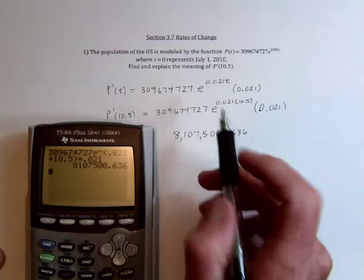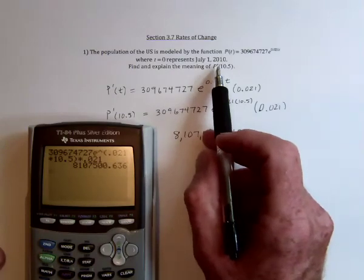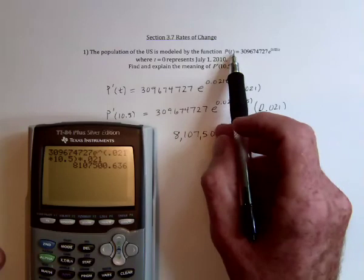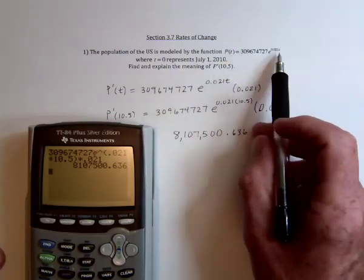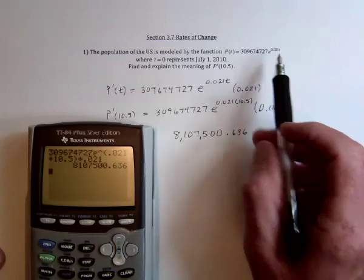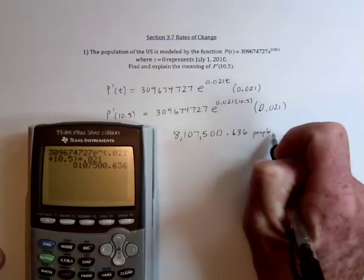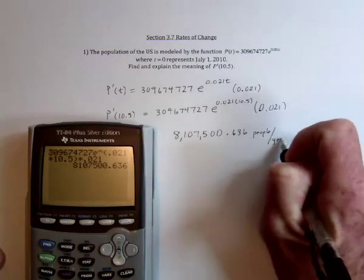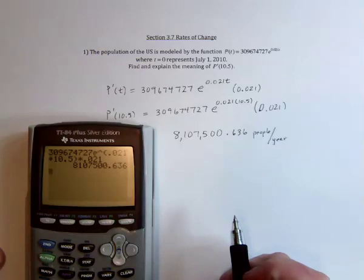And then explain the meaning. Well, the derivative is a rate. So it's a rate of how fast the population is growing. The t is in years, so this is people per year. So the population is growing by a little over 8 million people per year.